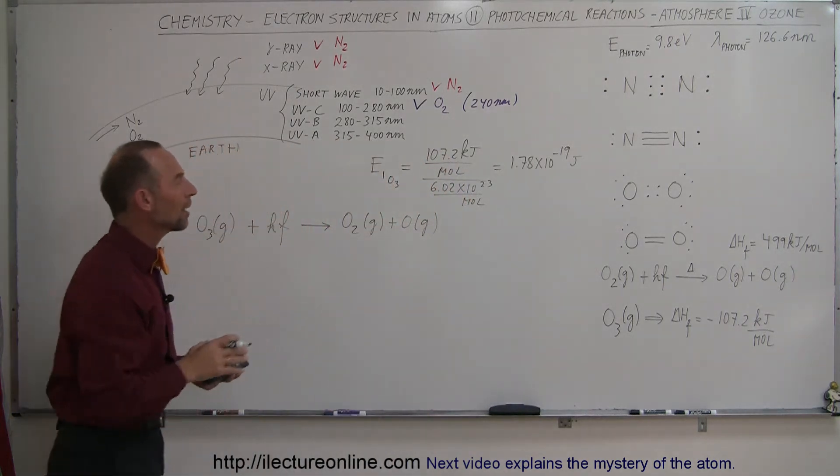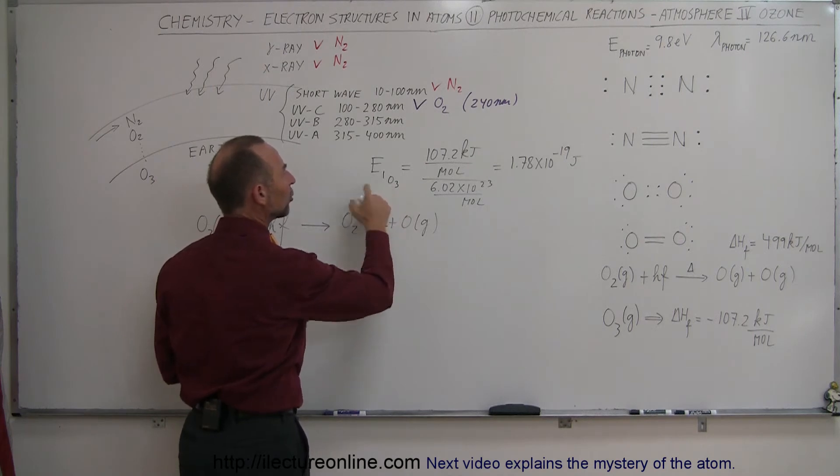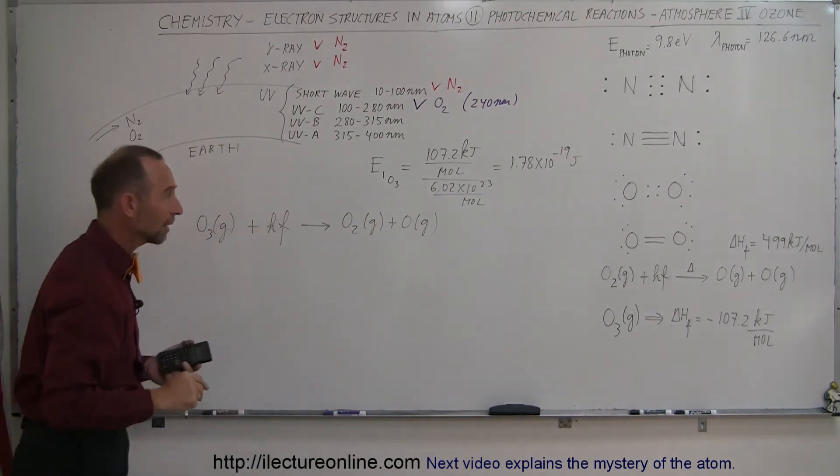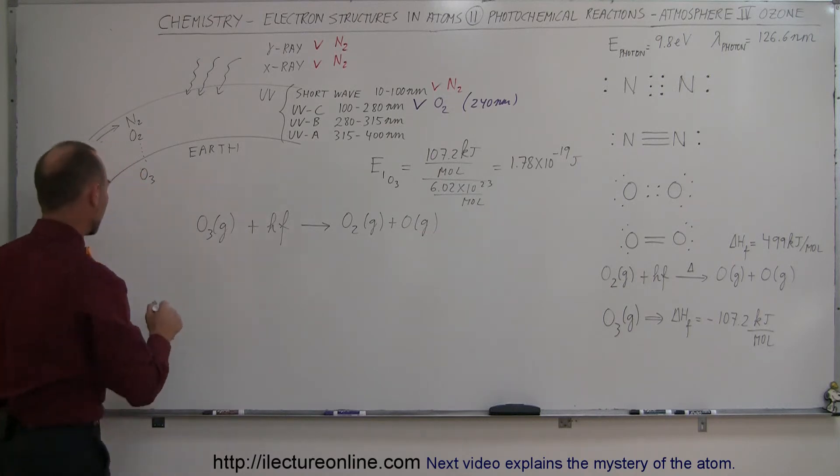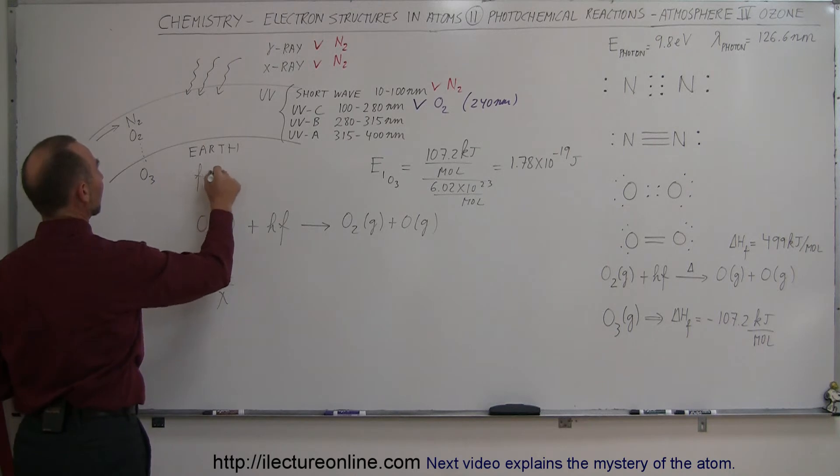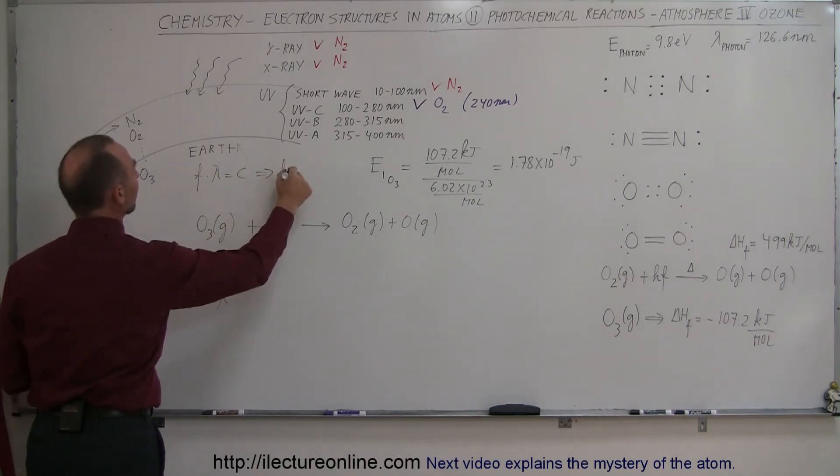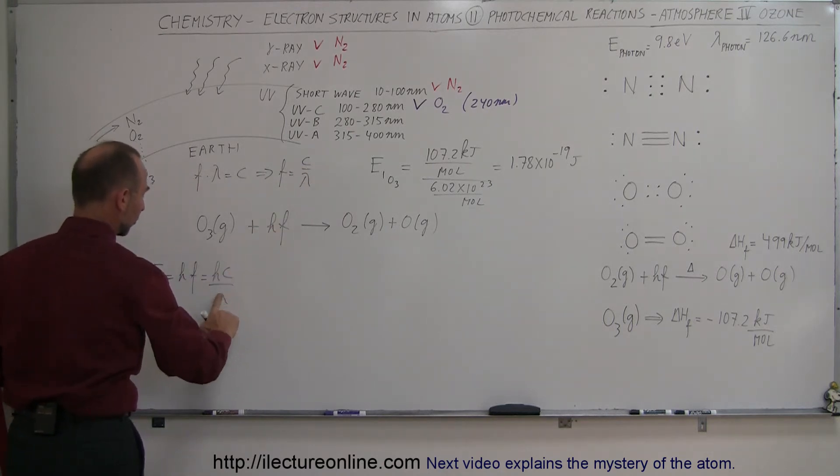What kind of photon will allow an ozone molecule to be dissociated? Let's figure that out by calculating its wavelength. The energy of a photon equals Planck's constant times the frequency, which equals hc over lambda. Keep in mind that frequency times wavelength equals the speed of light, so the frequency can be written as the speed of light divided by lambda, the wavelength.